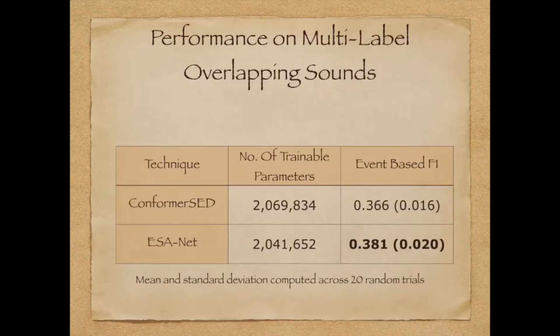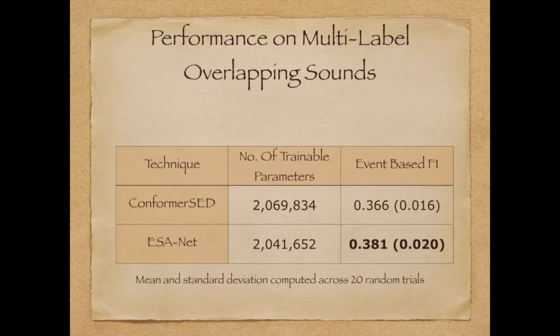Focusing the analysis on the subset of scenarios with overlapping sounds shows that across 20 random trials, ESA-Net consistently outperforms Conformer-SED with a similar number of trainable parameters. For further results and details of ESA-Net, please check out our presentation at Interspeech 2021.